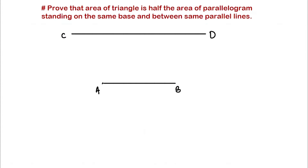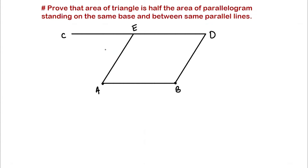Now let's make a parallelogram on base AB. Let's join B and D, and make another line parallel to BD. Let's name this point E. So now we have parallel lines AB and CD, and another pair of parallel lines BD and AE. We have our parallelogram ABDE standing on base AB, between the parallel lines CD and AB.